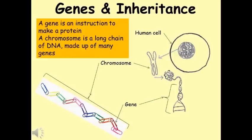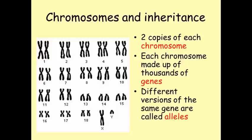We have 23 pairs of chromosomes in our cells, and we've inherited one copy of each chromosome from each one of our parents. These chromosomes feature the same genes, but sometimes the different copies of the chromosomes have slightly different versions of the gene. These are called alleles.